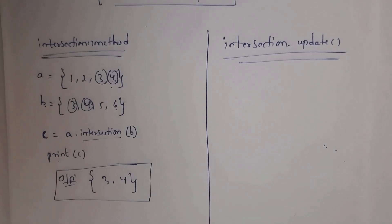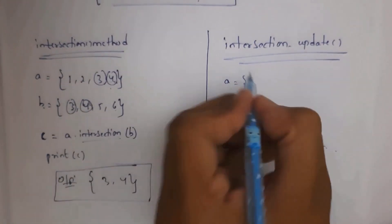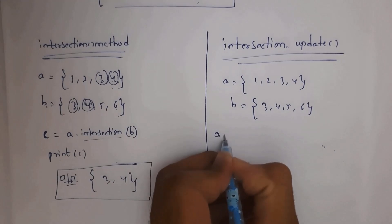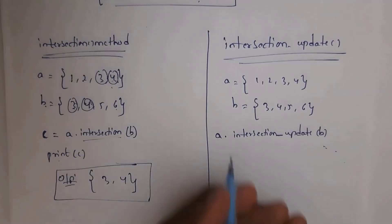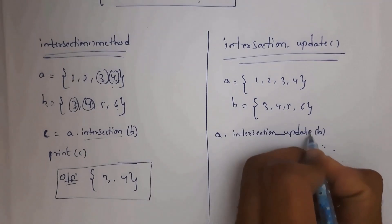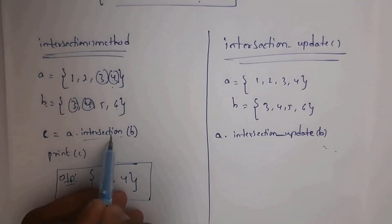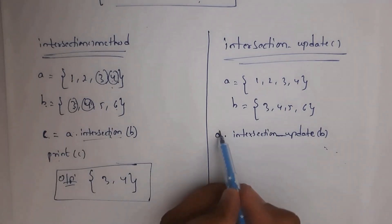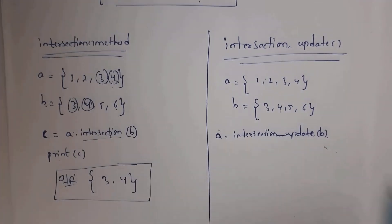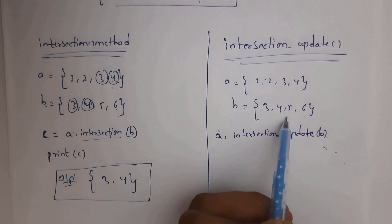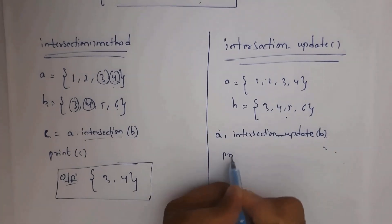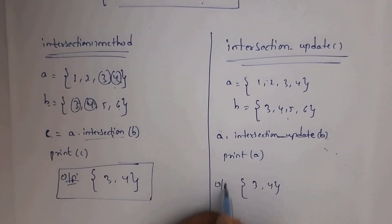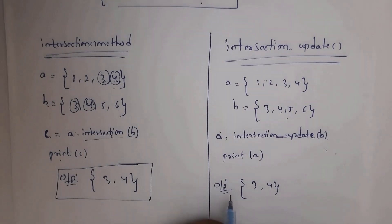Next I will explain the intersection_update method. Same example: a = {1, 2, 3, 4} and b = {3, 4, 5, 6}. I written a.intersection_update(b). The intersection method stores result in a separate variable c, whereas intersection_update stores the result in variable a itself. After performing intersection between set a and set b, the result is stored in a. Whenever you write print(a), you will get output 3, 4.